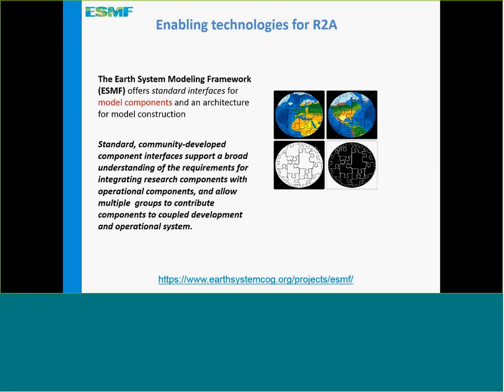The Earth System Modeling Framework is our kind of flagship product. It offers standard interfaces for model components and an architecture for model construction. What this really does for R to A — especially since it's a community-developed set of component interfaces — is that a broad set of people understand the requirements for integrating research components with operational components. This allows multiple groups to contribute components to coupled development in an operational system, which is a really powerful capability.